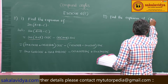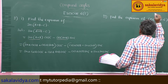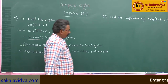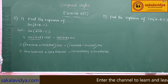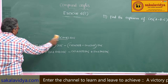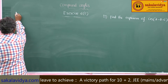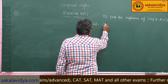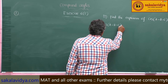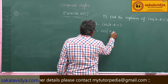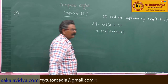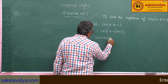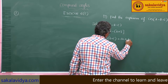Next expansion: find the expansion of cos(a - b - c). This can be rewritten as cos[a - (b + c)], using the cos(A - B) formula: cos a · cos(b + c) + sin a · sin(b + c). Now we expand cos(b + c) = cos b cos c - sin b sin c, and sin(b + c) = sin b cos c + cos b sin c.